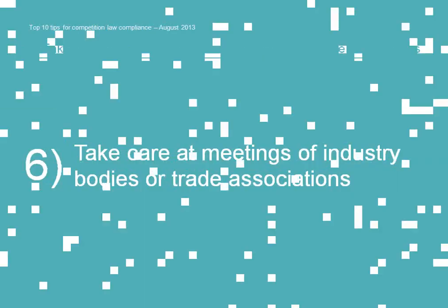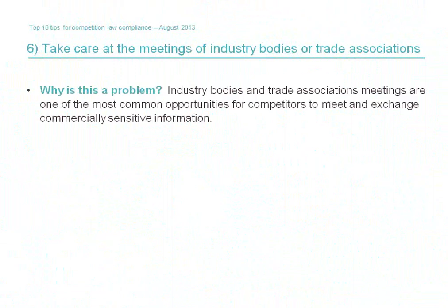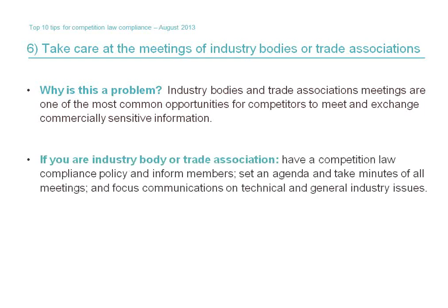Tip number six: take care at meetings of industry bodies or trade associations. Trade and industry associations can bring many benefits to the sectors they serve. However, in bringing together many independent market participants, there can also be an arena in which behaviour giving rise to competition risks takes place. If you are an industry body, make sure you have appropriate safeguards in place — have a competition compliance programme or manual, and make sure members are made aware of what discussions can and cannot take place. Ensure that the topics for discussion are agreed in advance in an agenda and stick to technical and general industry issues, avoiding commercially sensitive topics such as pricing. Ensure that meetings are minuted to provide contemporaneous evidence of what was, and importantly, what was not discussed.